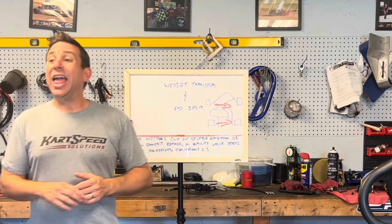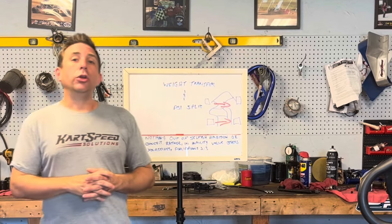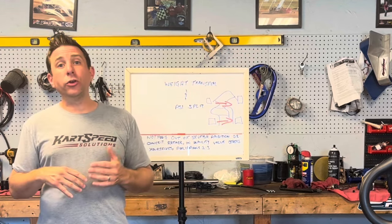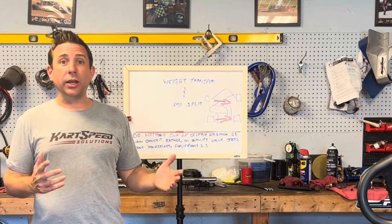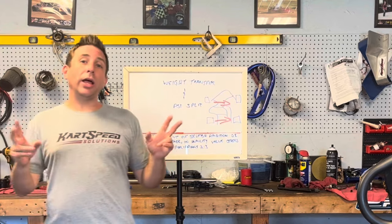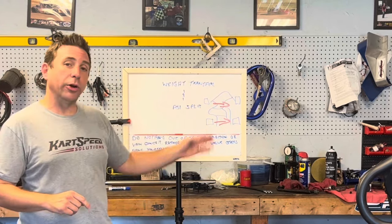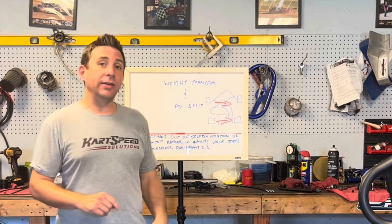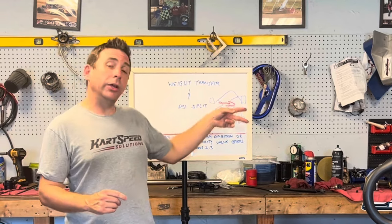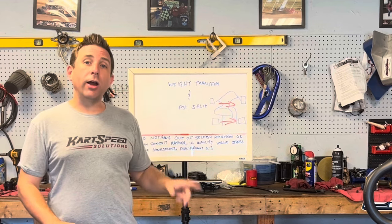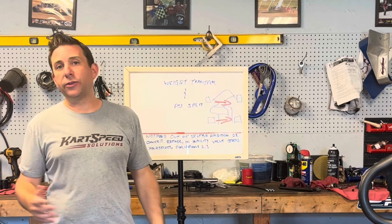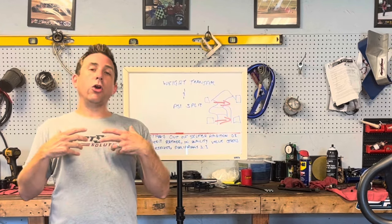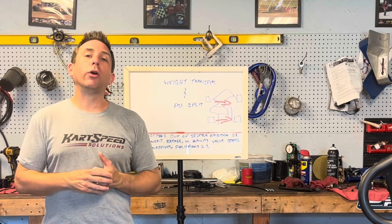In extreme situations you could run what's called a reverse split, meaning there's more air on your left side tires than your right. If you're running a negative one-pound split — left side tire pressure is one pound more than the right — the go-kart is going to really transfer weight over to the right sides because the spring rate on the right side tires is softer than the left, and the go-kart gains a whole lot more grip.